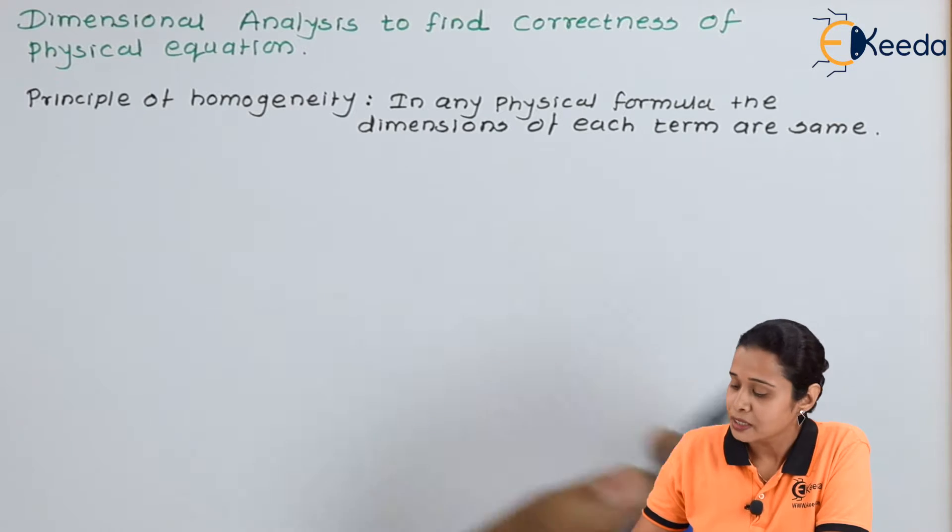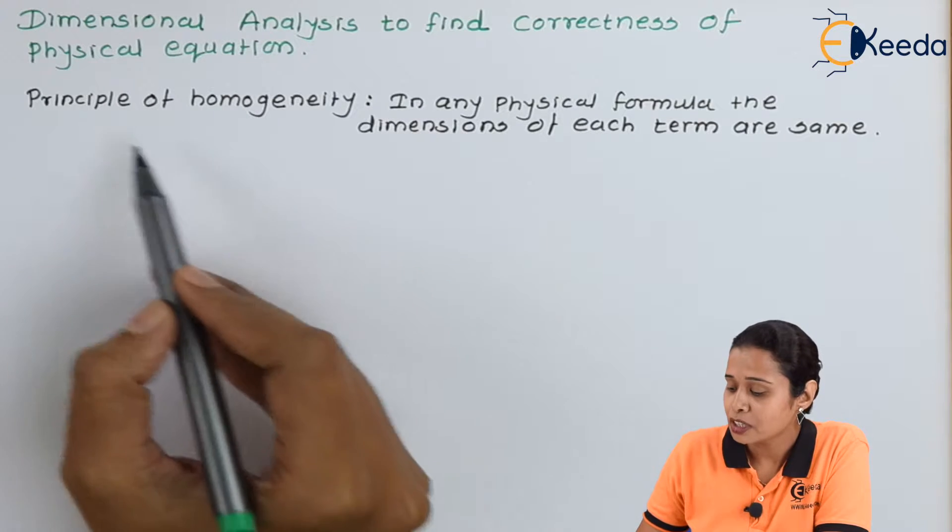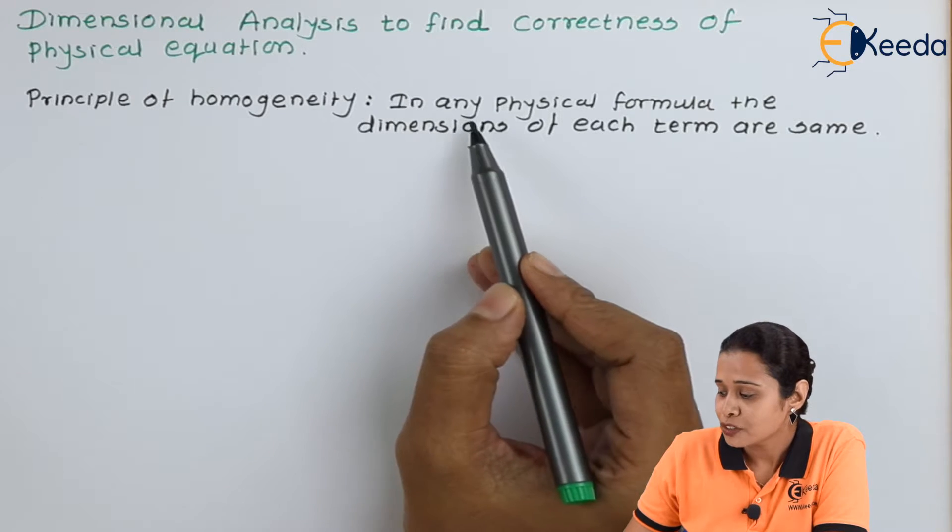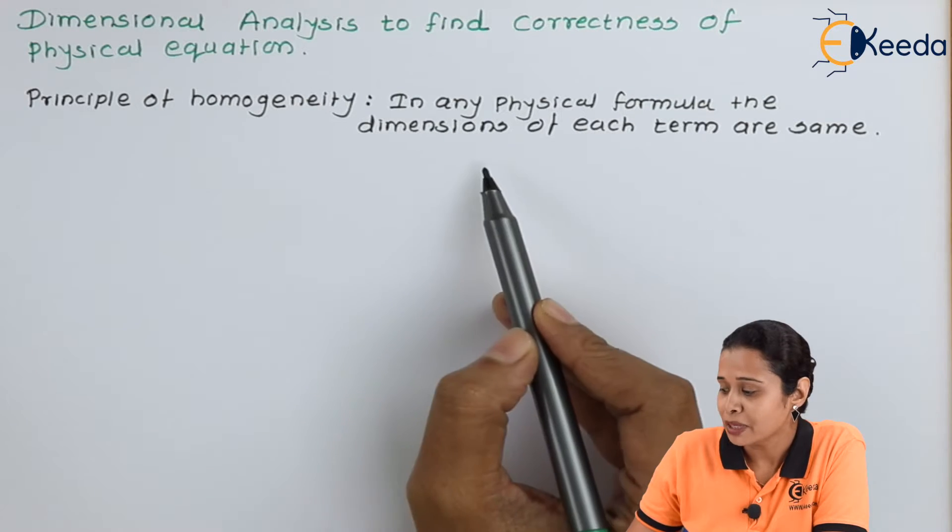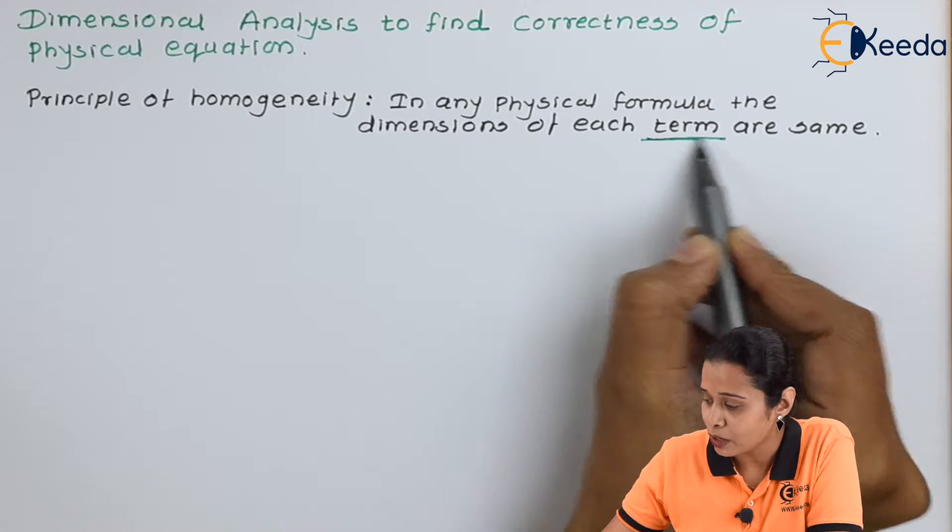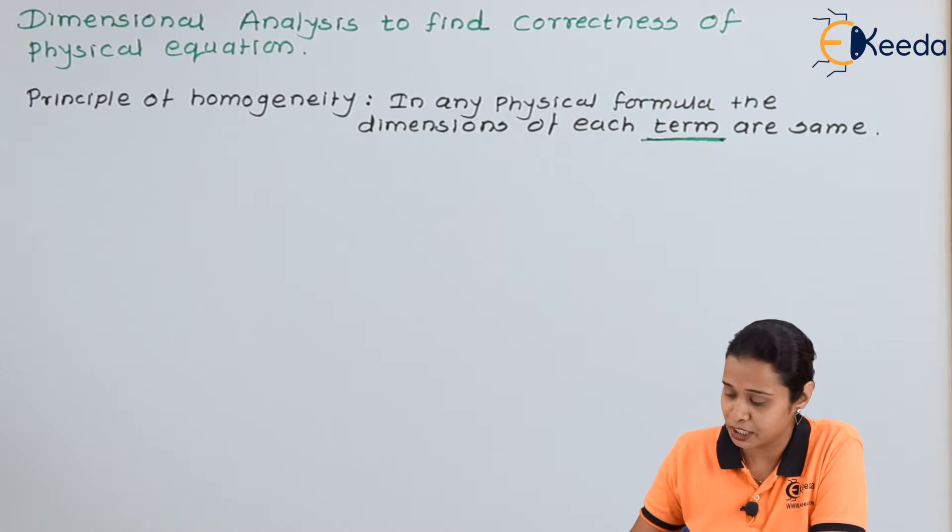Now let's start with this. Actually, the dimensional analysis depends on the principle of homogeneity. In case of physical formula, the dimension of each term should be same. This is the principle and on the basis of this principle, we have to find out the correctness of the equation.